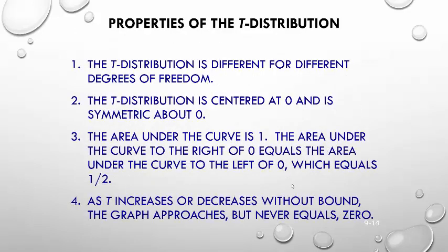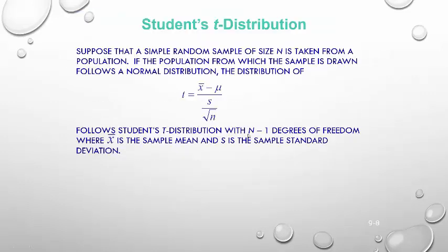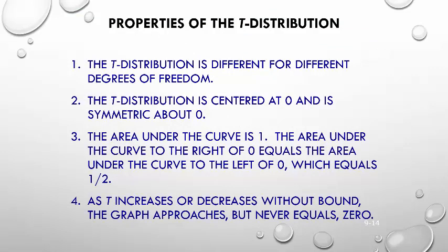Here are the properties of the t-distribution. The t-distribution is different for different degrees of freedom, and degrees of freedom equals n minus 1 — the sample size minus 1. Whatever the sample size is, that determines the degrees of freedom. The t-distribution is centered at 0 and is symmetric about 0. The area under the curve is 1, just like the standard normal curve, so the area to the right of 0 equals the area to the left of 0.